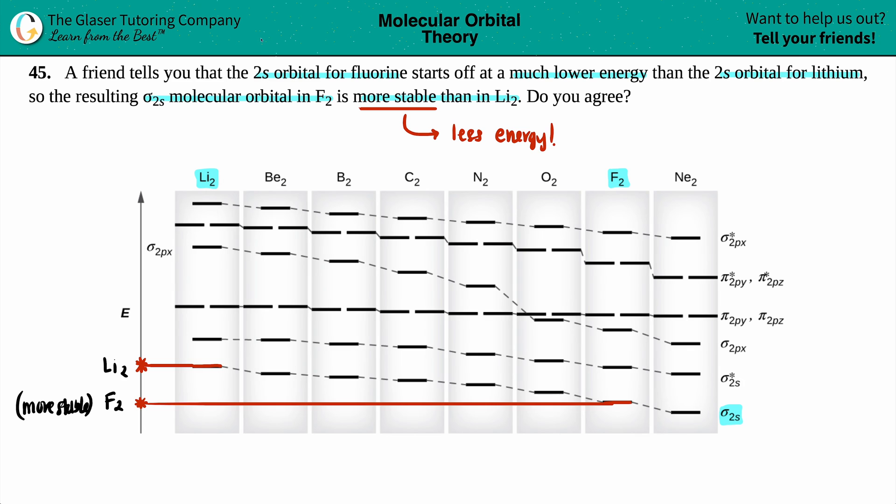And then the friend says, they tell you that the 2s orbital for fluorine starts off at a much lower energy than the 2s orbital. Now, the reason behind why the sigma 2s is lower in energy is all because of effective nuclear charge and radius.